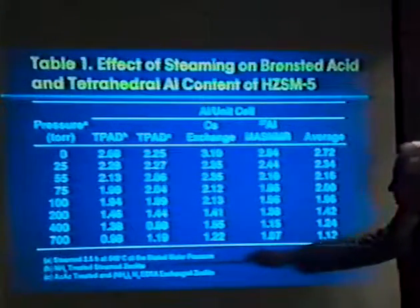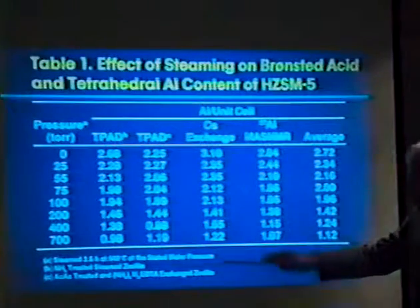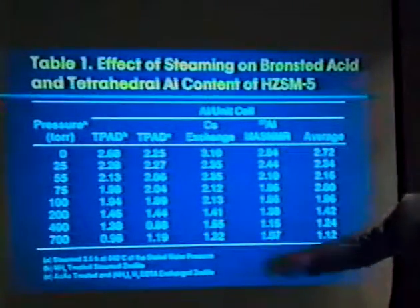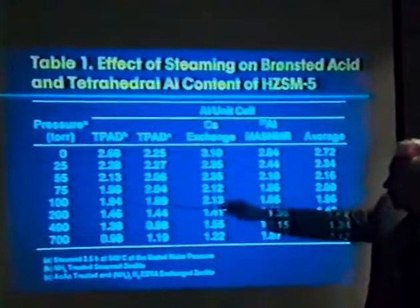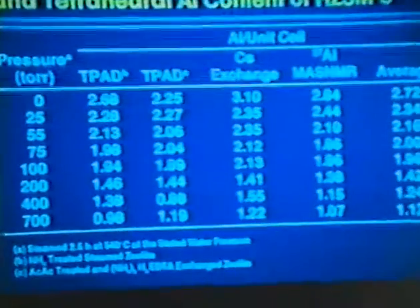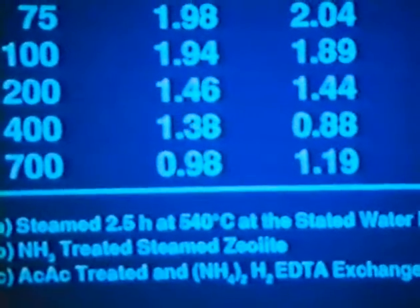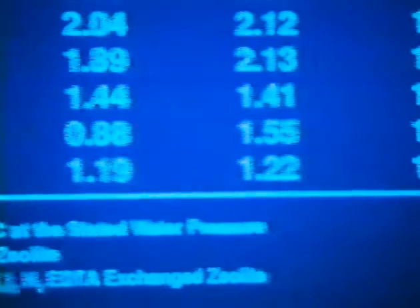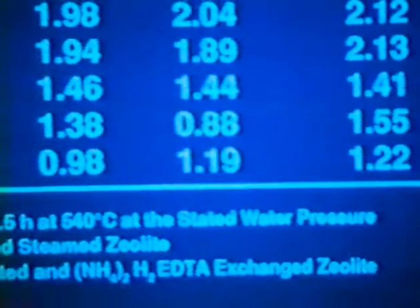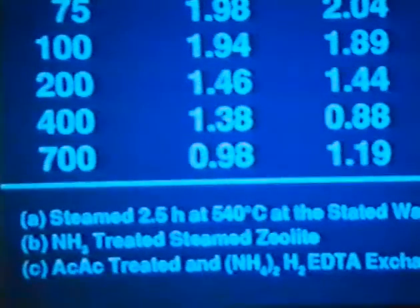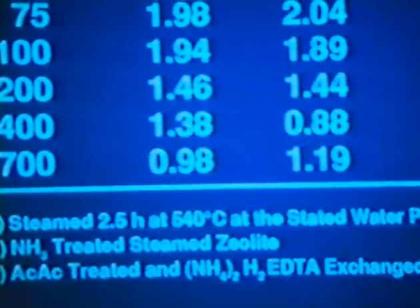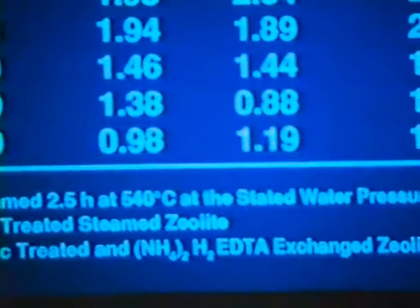This is steaming at constant time and temperature for various steam partial pressures. 25 torr, 100 torr, 700 torr, for the same time, 20 hours. And what we find, aluminum per unit cell, framework aluminum, measured by TPD, at different conditions, with and without subsequent treatment. The removal of the non-framework aluminum just going down. This is just measuring the remaining aluminum in the sites.